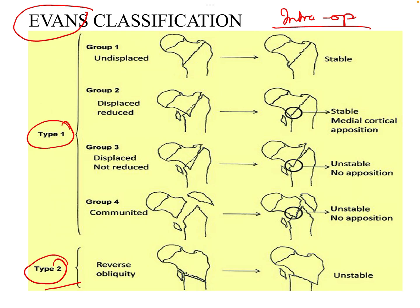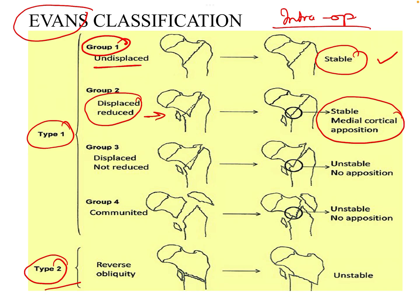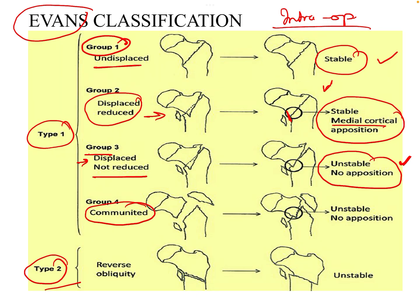Type 1 has four groups. The first is undisplaced, which is stable. The second is displaced but gets reduced on the fracture table, achieving medial cortical apposition — also stable. The third is displaced and not reduced on the fracture table, remaining unstable with no apposition. The fourth is comminuted fractures, which are inherently unstable and no apposition is achieved.